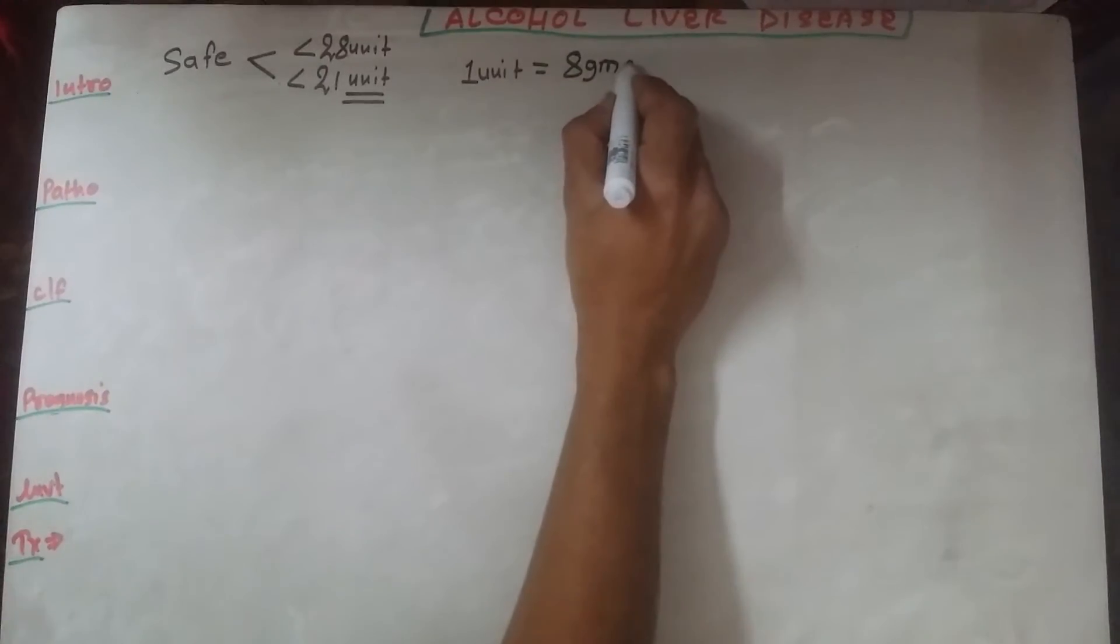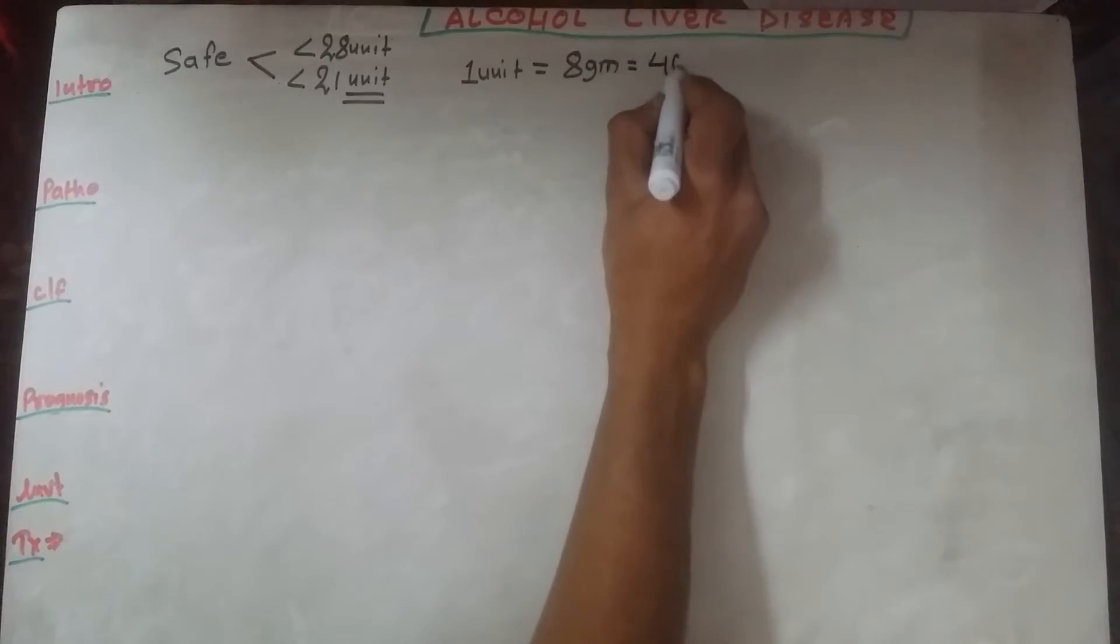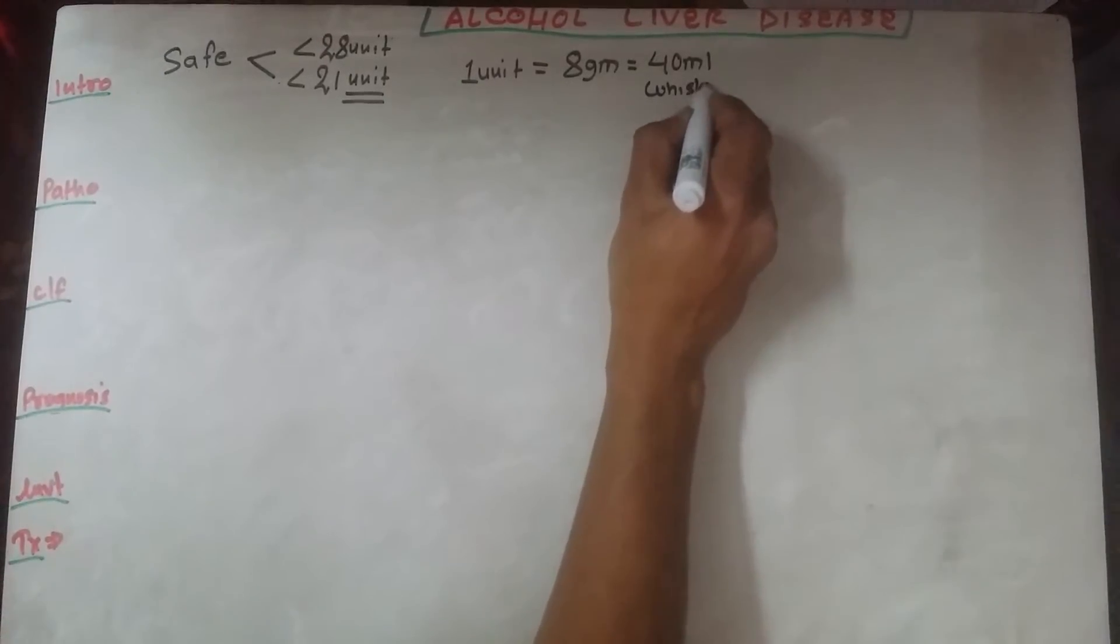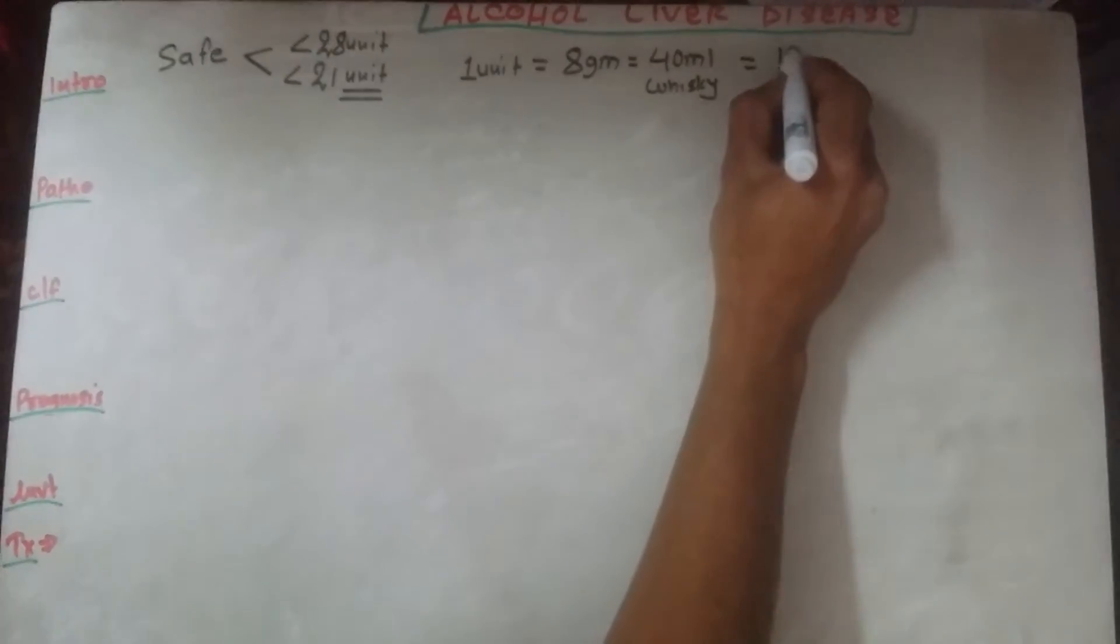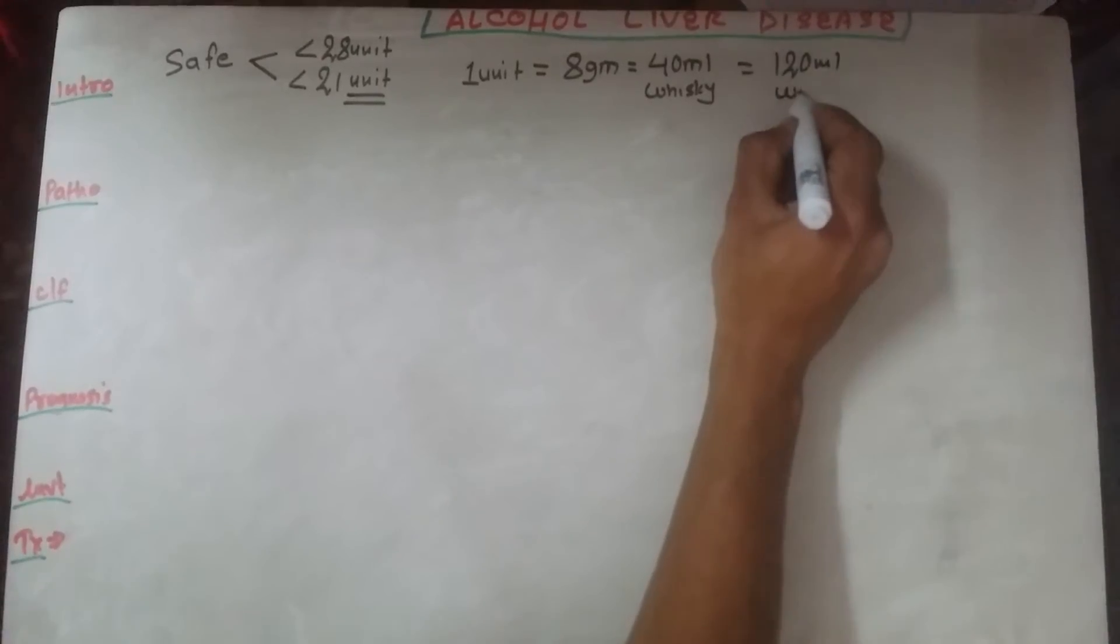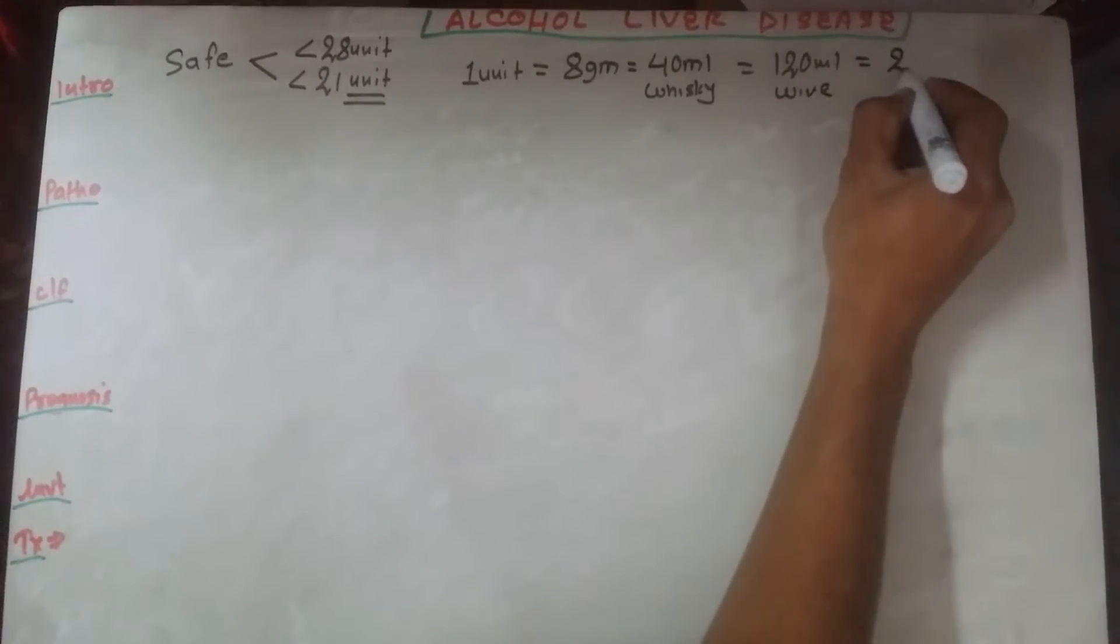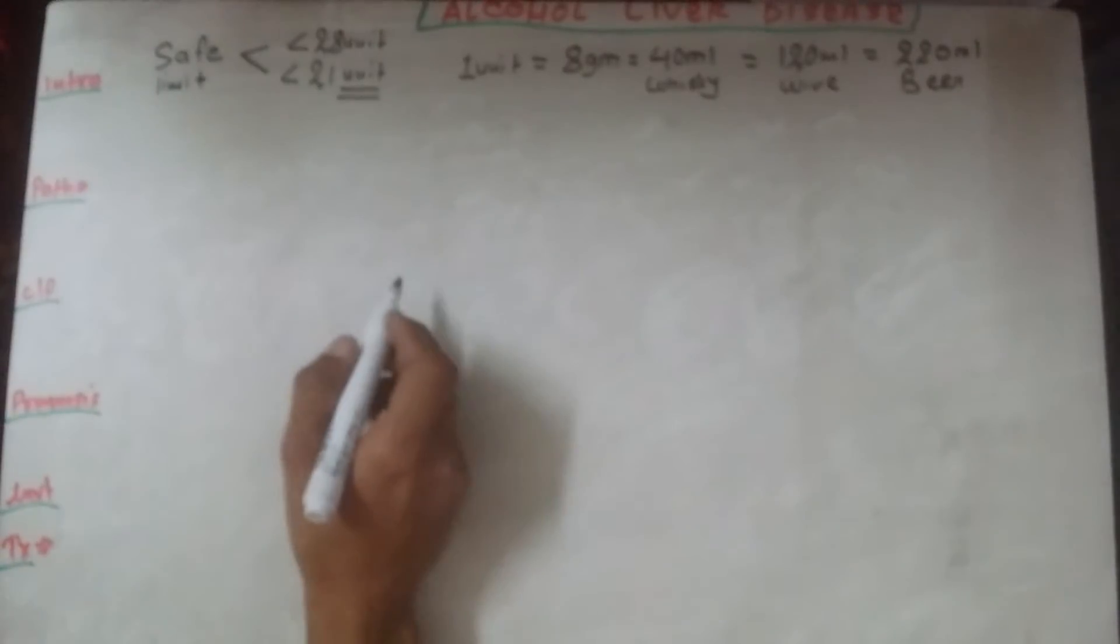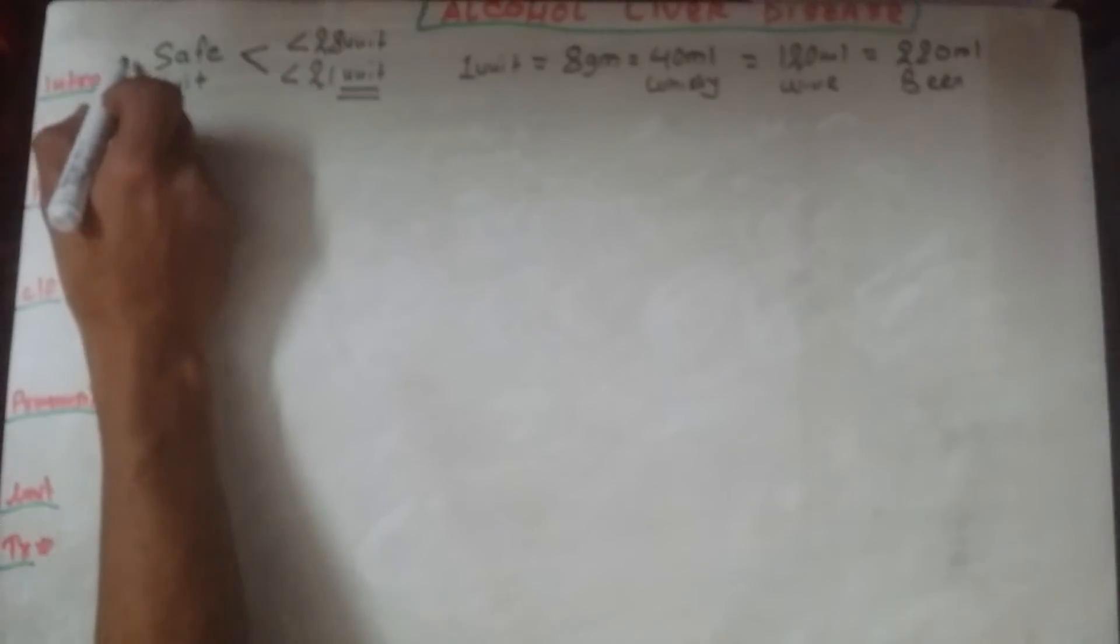Usually one unit of alcohol is equal to 8 grams of alcohol, and this 8 grams of alcohol is present in 40 ml of whiskey, 120 ml of wine, and 220 ml of beer.